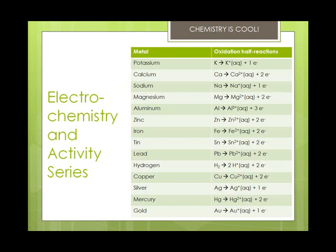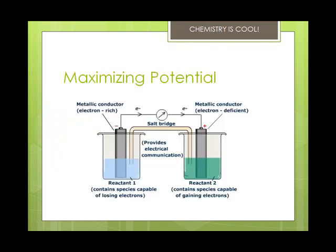You can use the activity series to help you predict what will happen to an electrochemical cell. Because zinc is higher on the chart than silver, zinc is the more active metal and you can expect it to be the one that gets oxidized. Because silver is not a very active metal, you can expect it to be reduced. If you place zinc and silver in the same beaker, the reaction will occur with direct transfer of electrons from the zinc to the silver cations, and will continue until one or both of the reactants is used up.